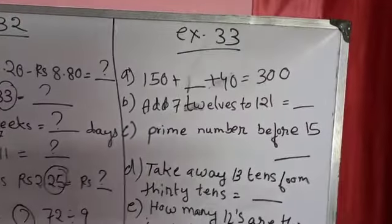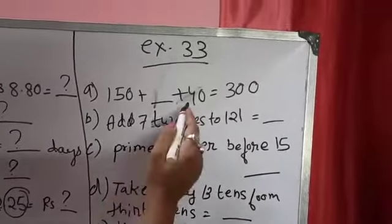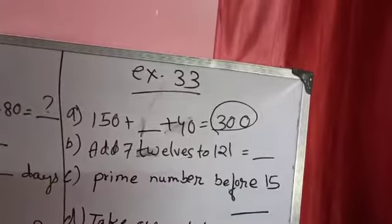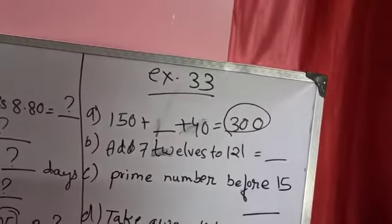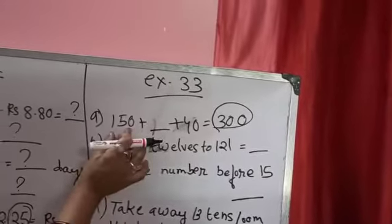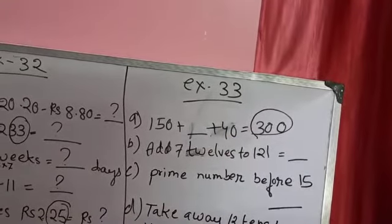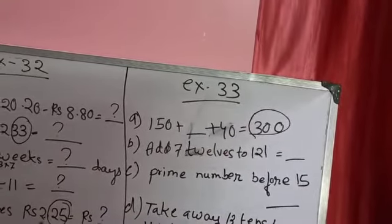150 plus 40 is given to you. The answer is given 300. So we know 150 plus 150 is 300. This we know very nicely. Keep this in mind. But here it is given 150 and 40 is given over here. So if you see, the difference is only 110. See, this 110 and 40 makes 150. So 150 and 150 is 300. Am I clear to you?